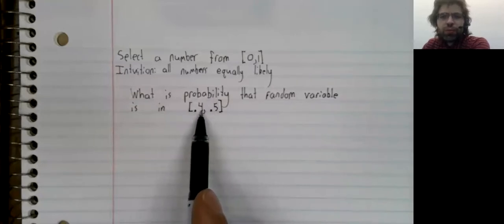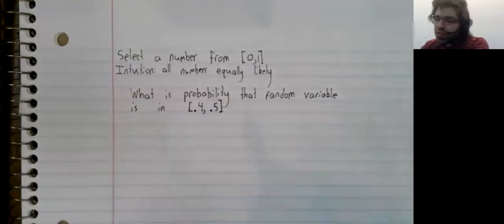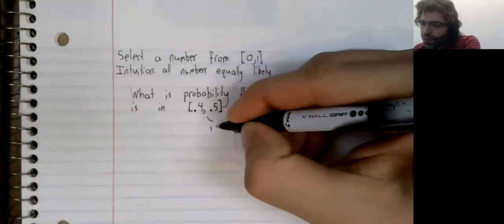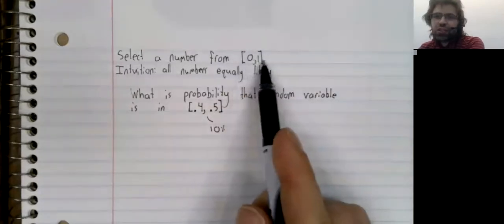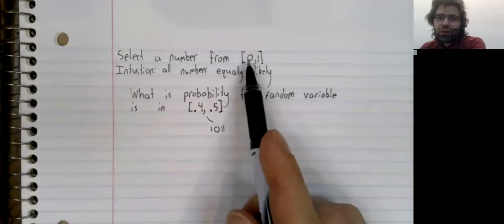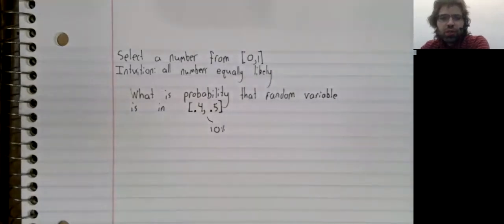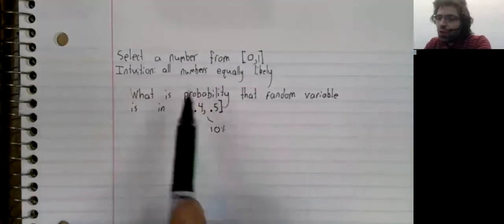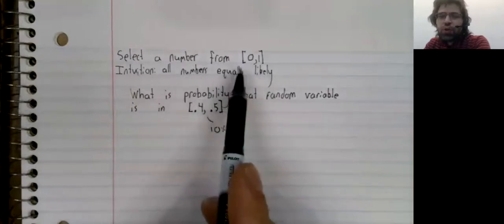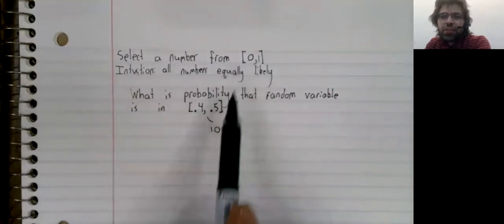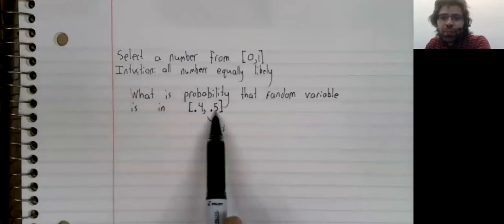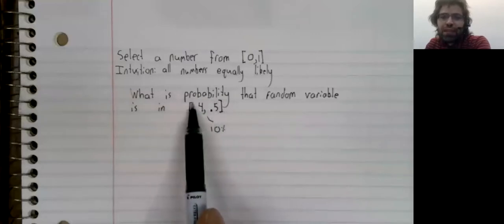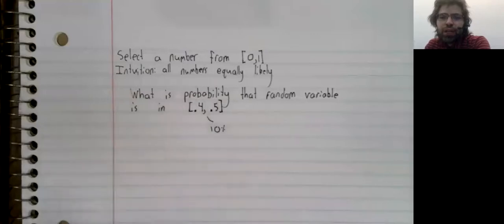Well, the interval from 0.4 to 0.5 takes up 10% of this interval. So, if we're thinking that all the numbers are equally likely, there's nothing stopping the random variable from being in here.